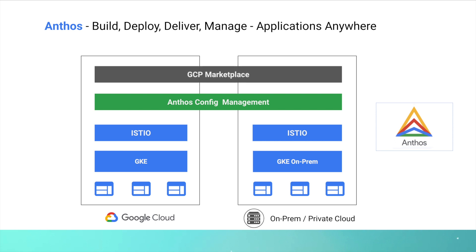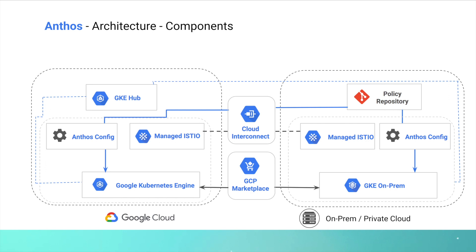Anthos also comes with GCP Marketplace, where you can deploy applications using one single config and control plane. For example, if you are running a simple website using WordPress, you can go to GCP Marketplace and install WordPress without running multiple commands. You can do the same for on-premises on your own private cloud as well using Anthos.